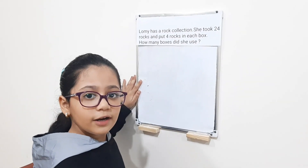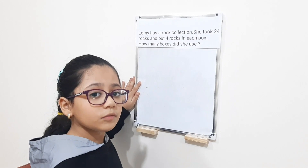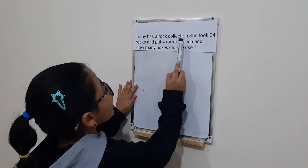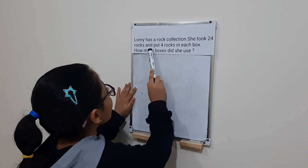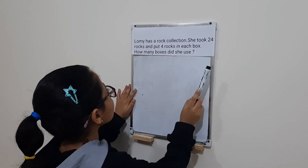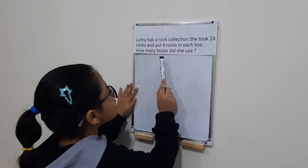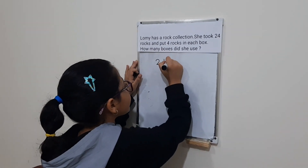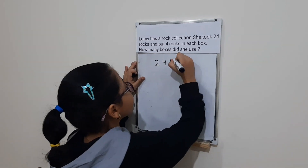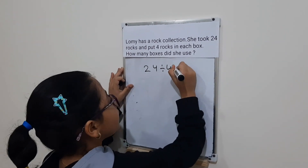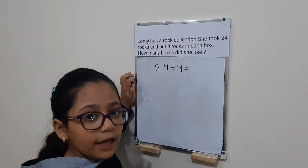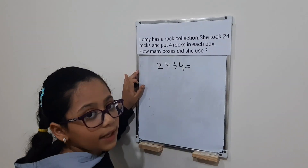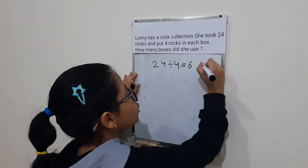Now we will see another example with the problem-solving method. Lumi has a rock collection. She took 24 rocks and put four rocks in each box. How many boxes did she use? So we will make 24 divided by four. That means six times four equals 24, so the quotient is six boxes.